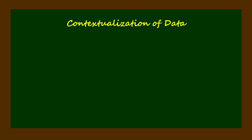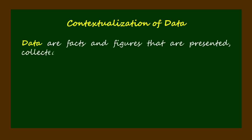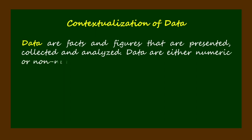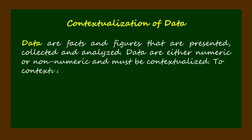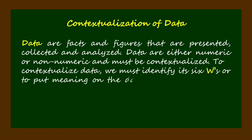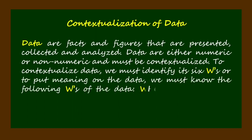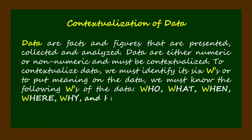After the information is gathered, contextualization of data is necessary. Data are facts and figures that are presented, collected, and analyzed. Data are either numeric or non-numeric and must be contextualized. To contextualize data, we must identify its six W's — that is, to put meaning on the data, we must know: who, what, when, where, why, and how.